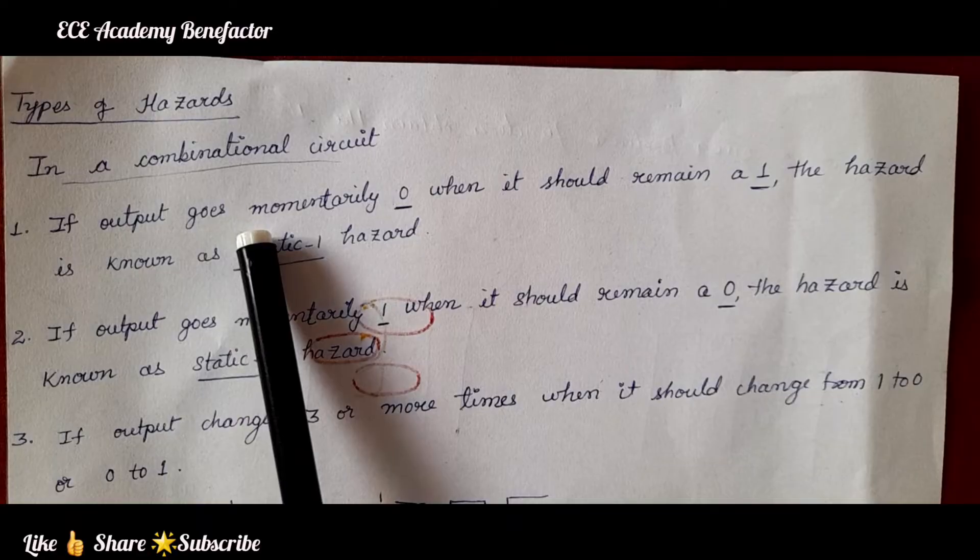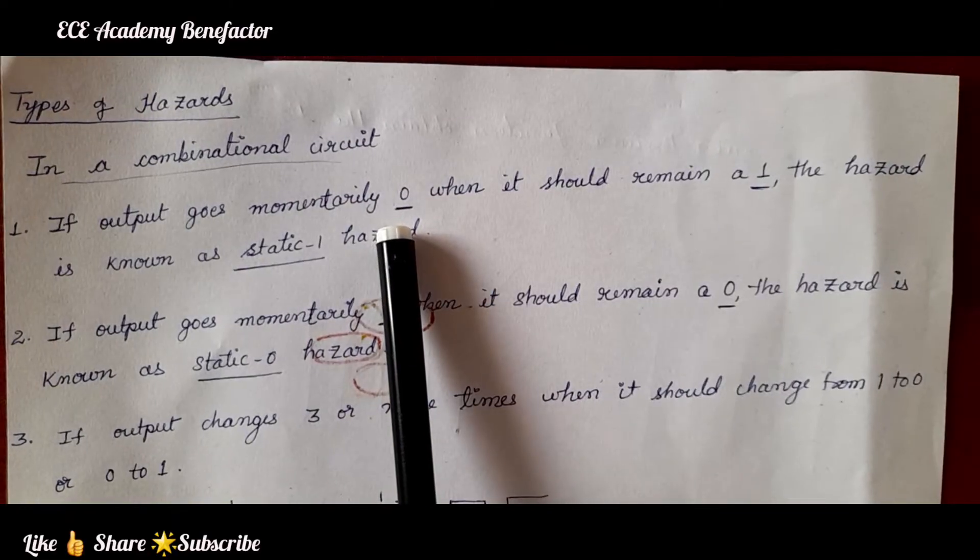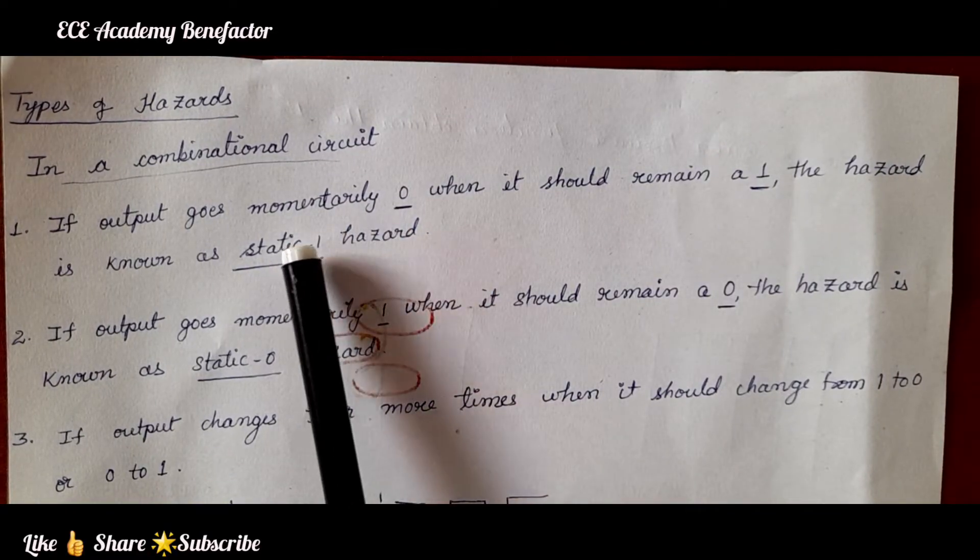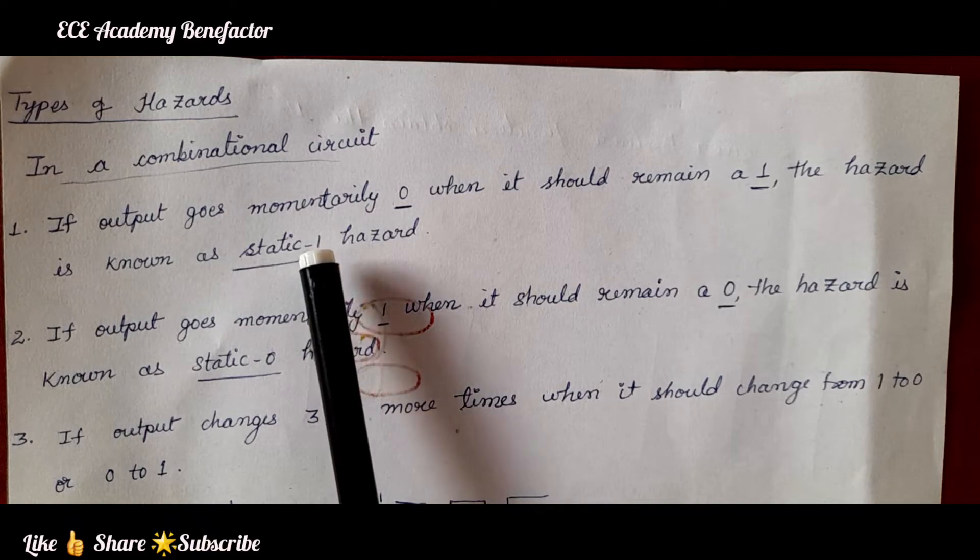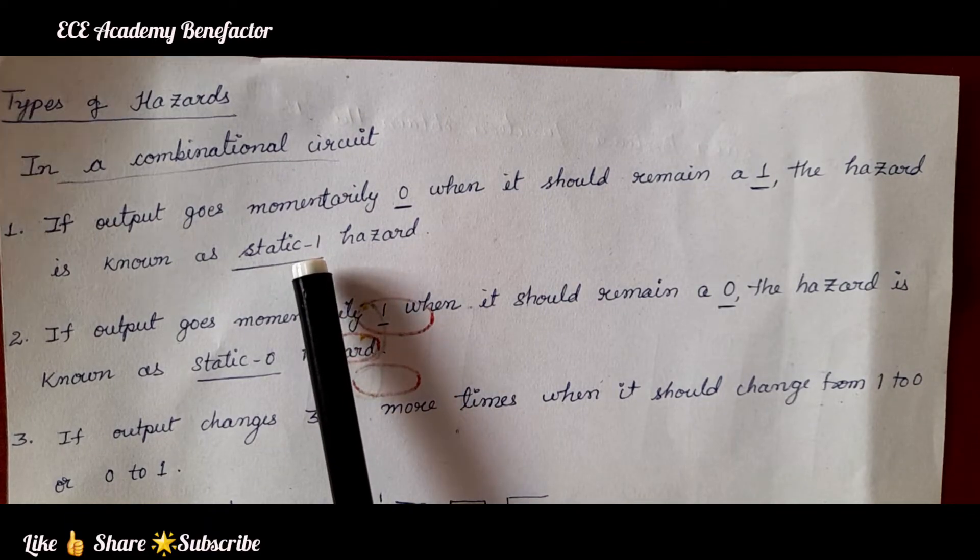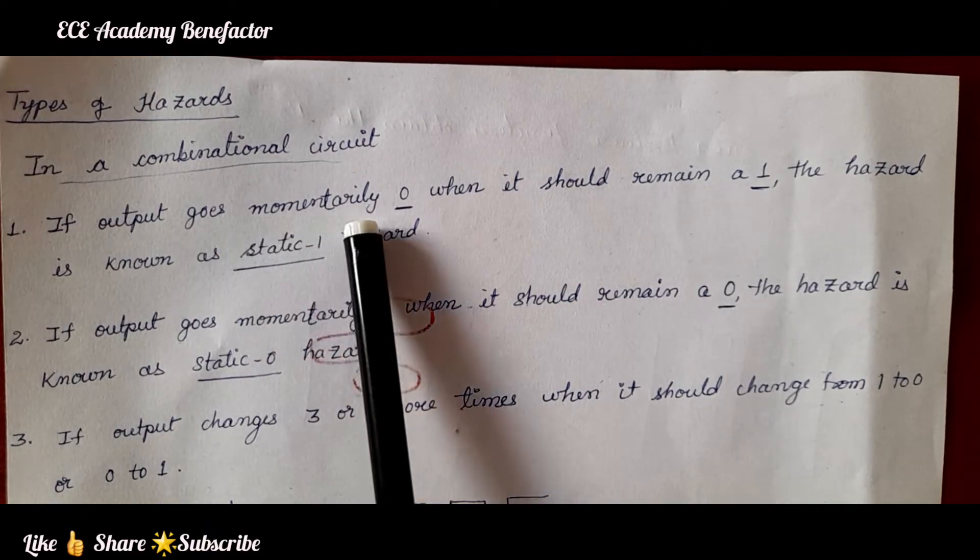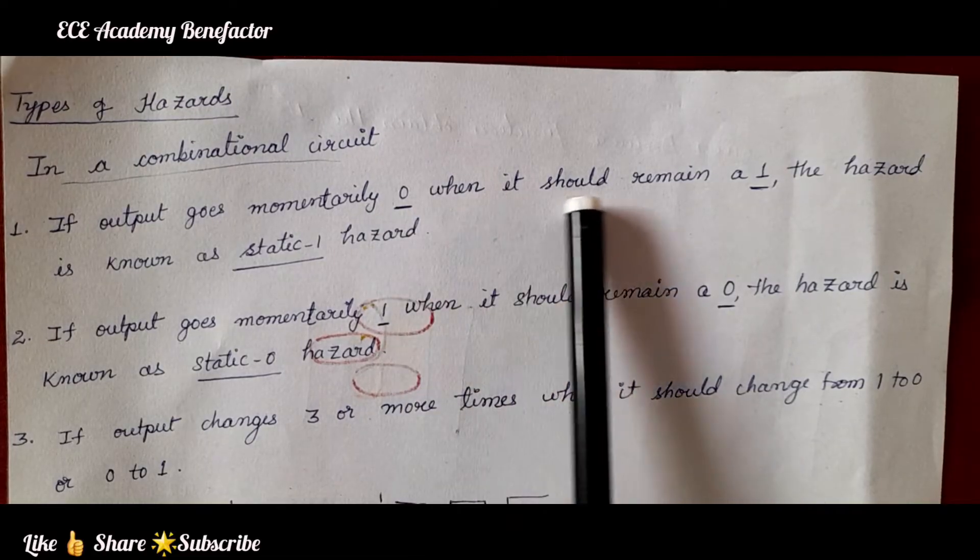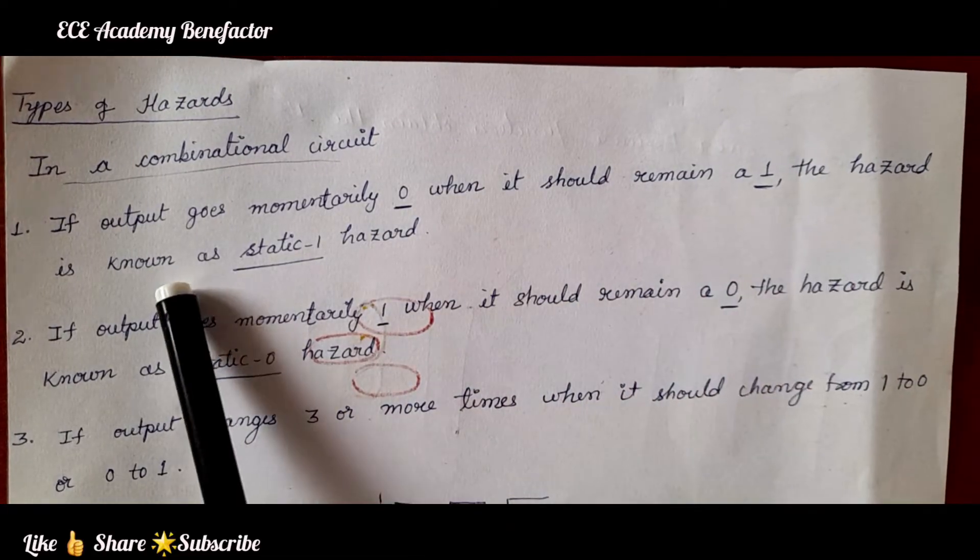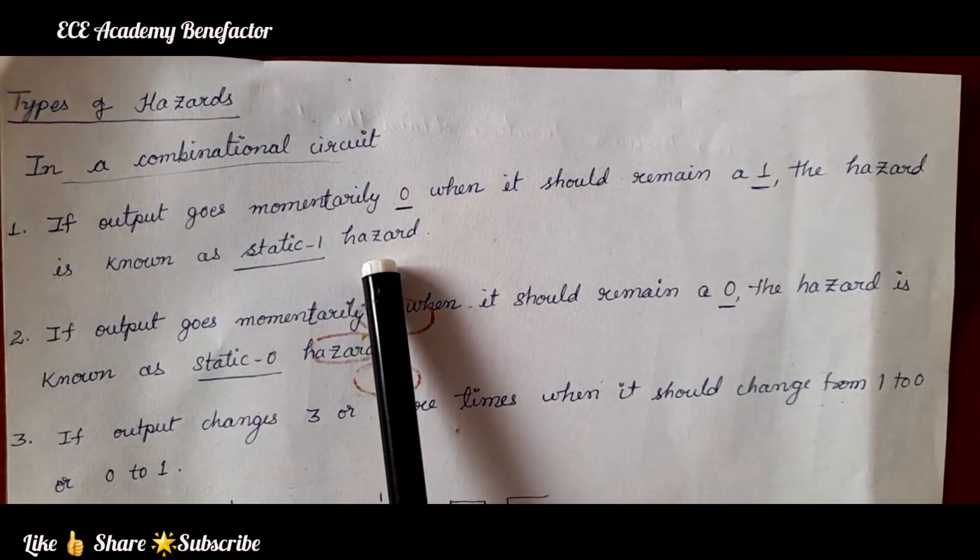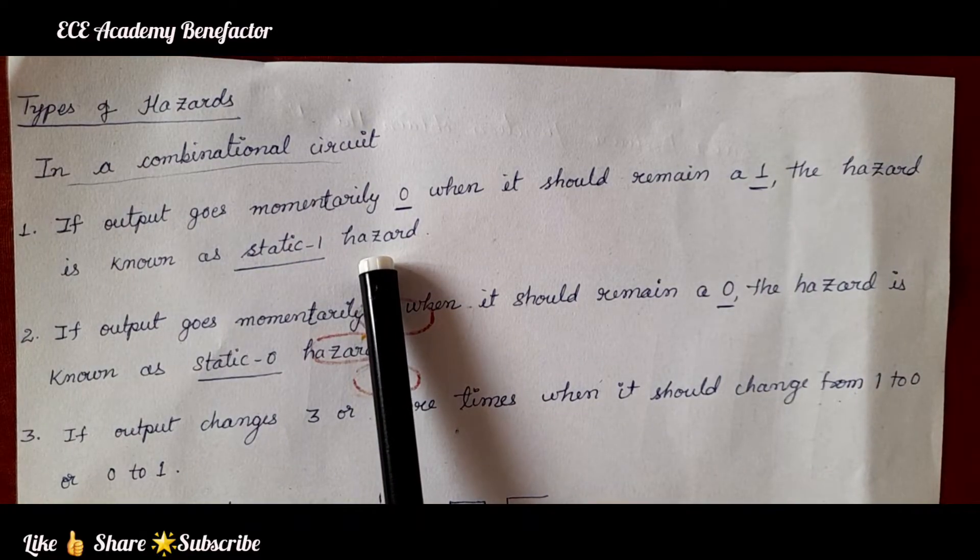If the output goes momentarily 0, static 1 means it should be held to 1, the output should be held to 1, but it is going momentarily to 0. When it should remain at 1, the hazard is known as static 1 hazard. So, it is easy to remember also.